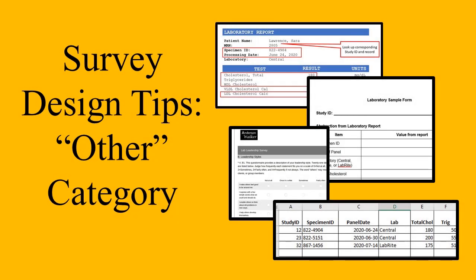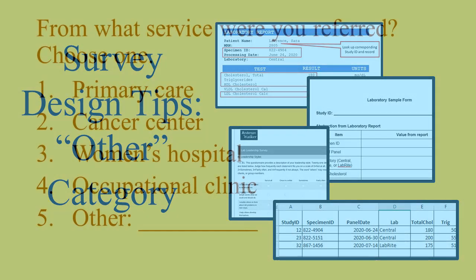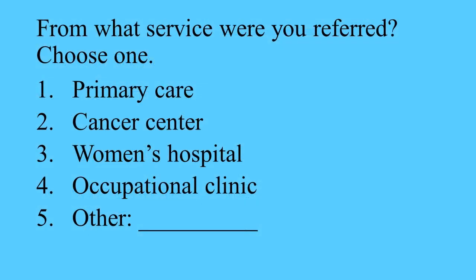People often don't realize how much complexity there is to adding an 'other' category to an item on a survey. Consider this question that you might fill out if you go to a commercial lab to get a lab test. You might see the question: from what service were you referred? You can choose from choices 1 through 4 — primary care, cancer center, women's hospital, or occupational clinic — or you can choose number 5, which is other.